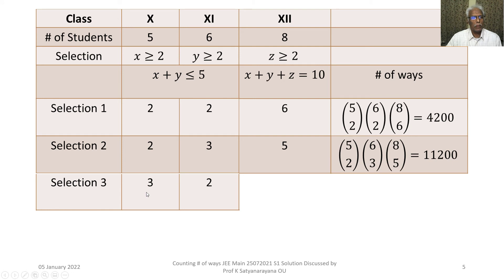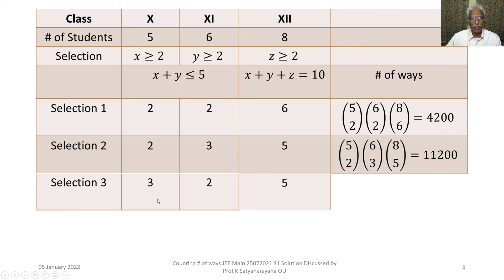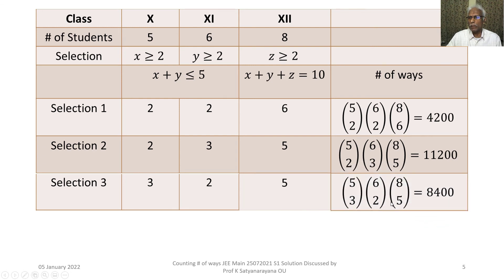For Selection 3, taking 3 from class 10 and 2 from class 11 gives 5, so the remaining 5 will be from class 12. By the product rule of counting, the number of ways is 5C3 × 6C2 × 8C5, which equals 8400.